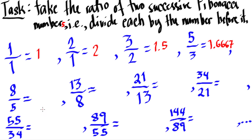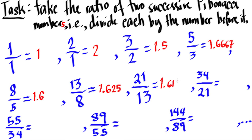Next we have 8 over 5, and we're going to observe what happens after we take the ratios and divide each number by the number before it. 8 divided by 5 is 1.6 — it's terminating, so there's no number after that. 13 divided by 8 gives us 1.625 — it also terminates. 21 divided by 13 gives us approximately 1.6154, rounding to four decimal places.